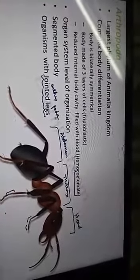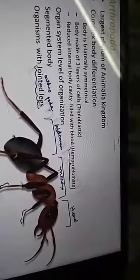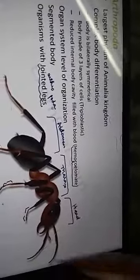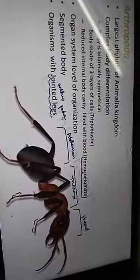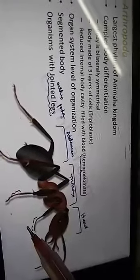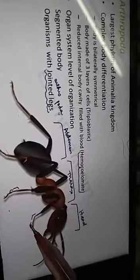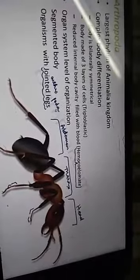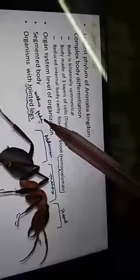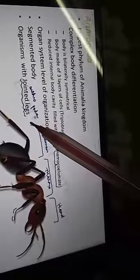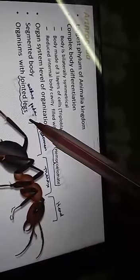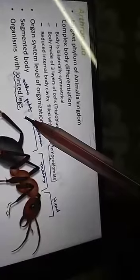Why are they given the name Arthropoda? Because 'arthro' means jointed and 'poda' means legs — organisms with jointed legs. You can observe the joints here and another joint here. Because of these jointed legs, they can quickly and easily move from one place to another — locomotion is facilitated by the jointed legs.